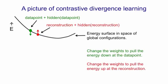We then change the weights to pull the energy down at the data point and to pull the energy up at the reconstruction. And the effect of that will be to make the surface look like this. And you'll notice we're beginning to construct an energy minimum at the data. You'll also notice that far away from the data, things have stayed pretty much as they were before.